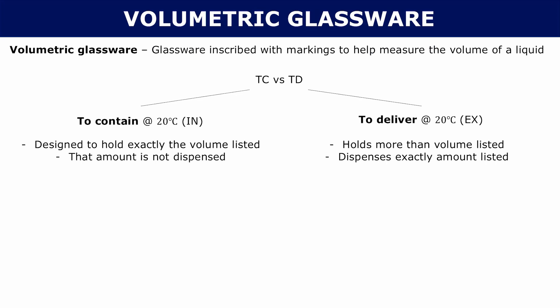Again, volumetric glassware has the markings on it. So if you ever go to buy it or you see it at a lab or something, they'll be marked either TC or TD.